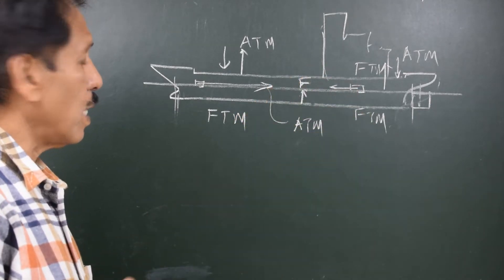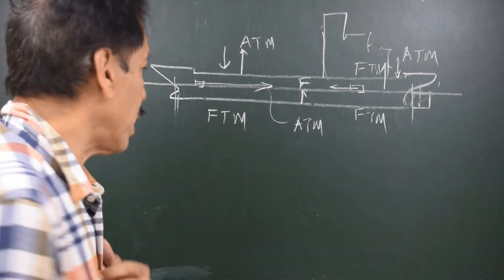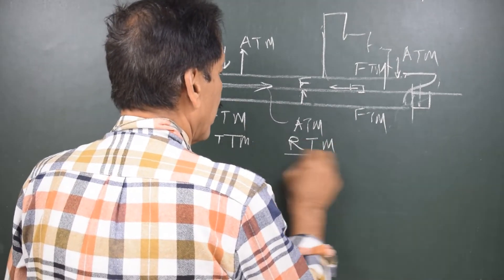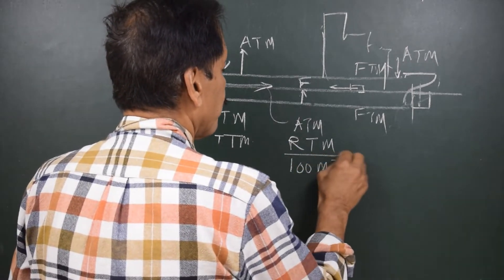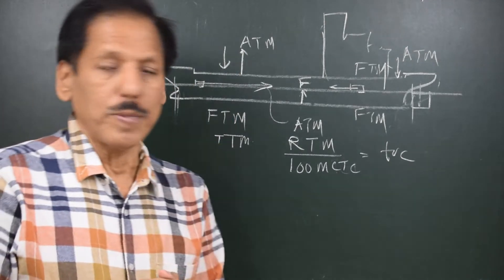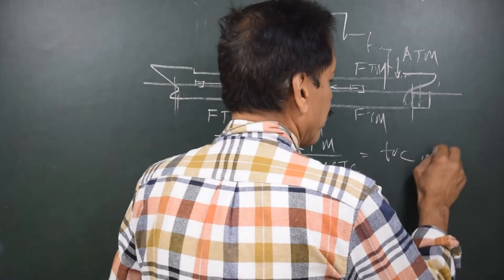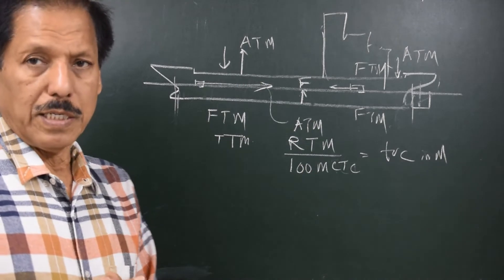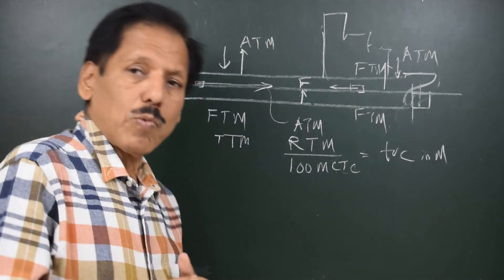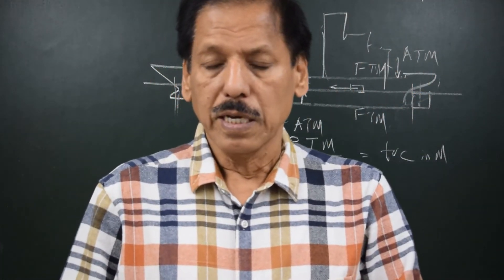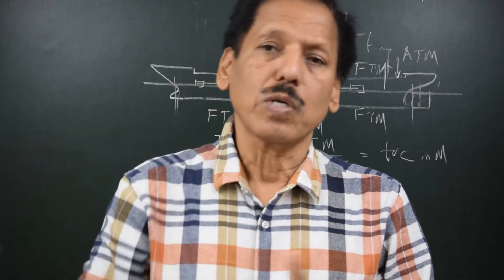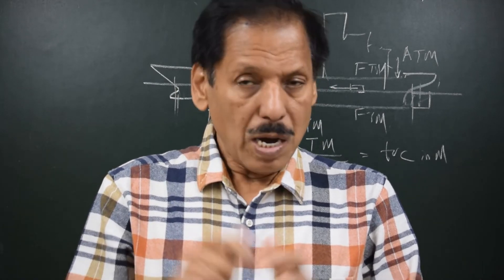Forward and aft trimming moments can be accumulated, and the resultant trimming moment divided by 100 MCTC gives trim change in meters. MCTC is the moment to change the trim by 1 cm. MCTC can be found by the formula: MCTC equals W — the displacement of the ship — multiplied by GML, which is the vertical distance from center of gravity to the longitudinal metacenter, divided by 100 times the length of the ship. We are going to derive this formula.